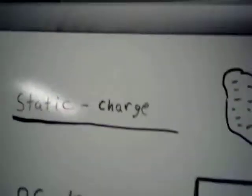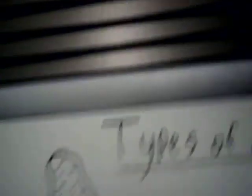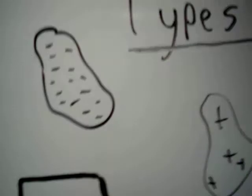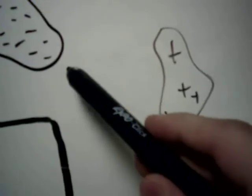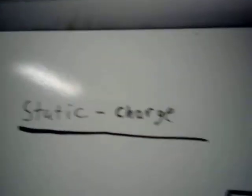So the only time static actually flows is when there's another body. Say this one is all negative. We have an all positive body like this. They will discharge. But there is no return flow like AC or DC, so it's not current. It's still electricity, but it's not current.